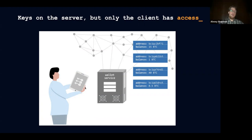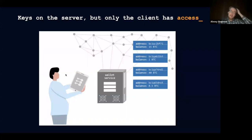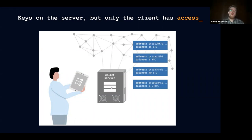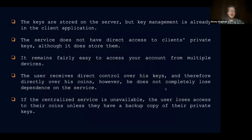To summarize: the user generates keys for managing the coins locally on the device. Using a password-based key derivation function and a master password, an encryption key is derived. This encryption key is used to encrypt the account keys, which are then placed in an encrypted container on the server — for storage only, inaccessible to anyone. When needed, the user requests the encrypted container, enters the master password, decrypts it locally, and uses the keys to sign transactions. The user only needs to remember their identifier and the master password.